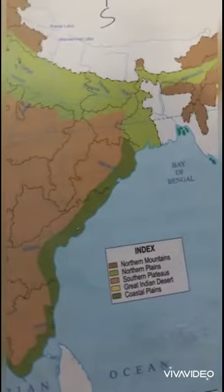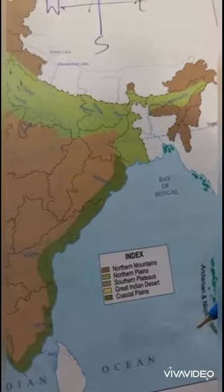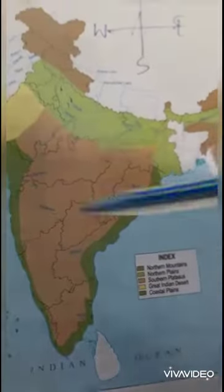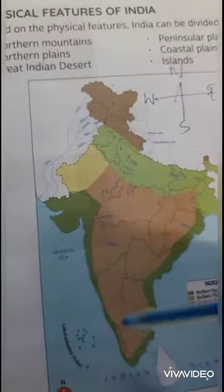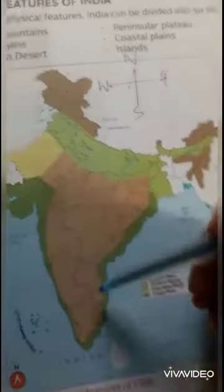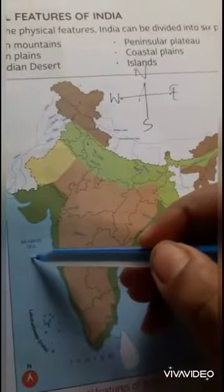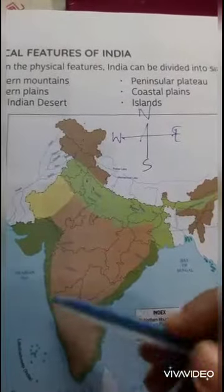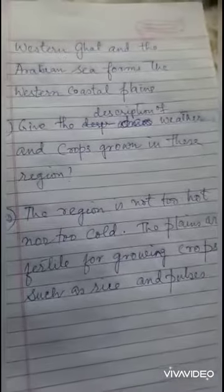Looking at the map, the coastal area is the part that lies near the sea or ocean. On this side is the Arabian Sea and on this side is the Bay of Bengal. The stretch of land between the Eastern Ghats and the Bay of Bengal is the Eastern coastal plain, and the part between the Arabian Sea and the Western Ghats is the Western coastal plain.